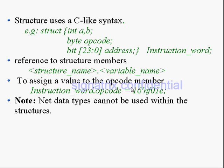To assign a value to a particular member in the structure, you use the dot operator to access that member and then assign the value. One important note: net data types cannot be used within the structure. Net means wire — you cannot use wire. You can use int, byte, integer, and similar types, but net is not possible to use.